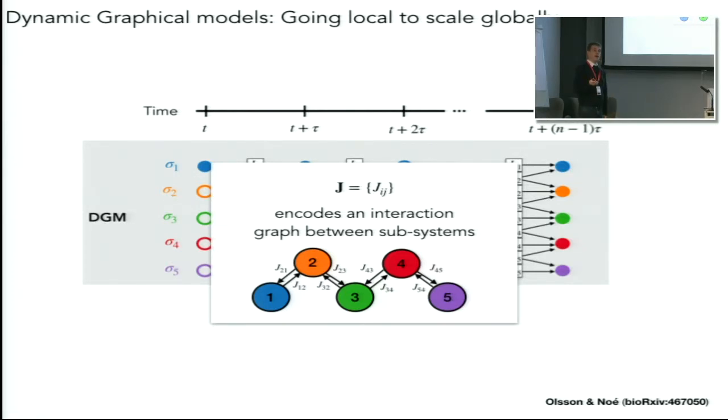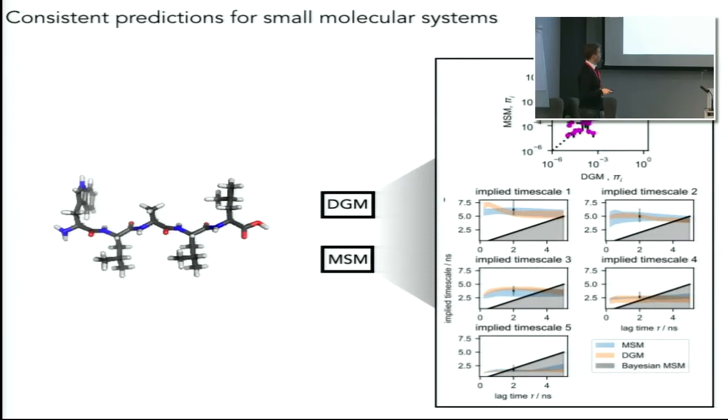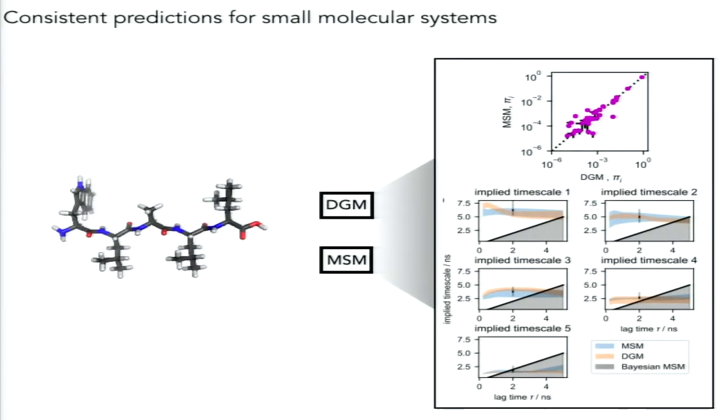In order to test this method we looked at a very small peptide with five amino acids and we split this into seven subsystems. We have extensive simulation for this relatively simple peptide so we could directly compare the dynamic graphical modeling approach with a Markov state modeling approach, which is the traditional global state approach. We can compare thermodynamic properties - the stationary distribution predicted by the Markov state model and the dynamic graphical model - and we generally see very good agreement between the two distributions. It's not perfect for very low density areas but we don't expect relatively high certainties in those areas anyway.